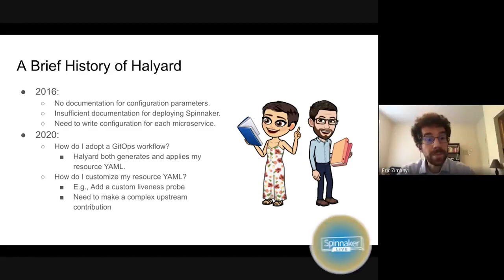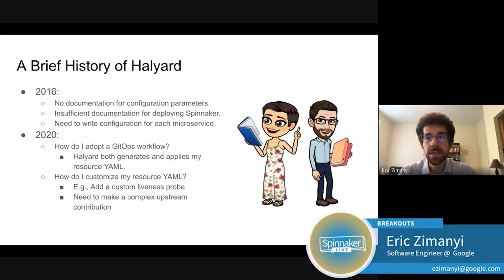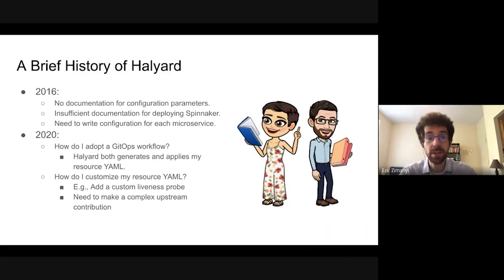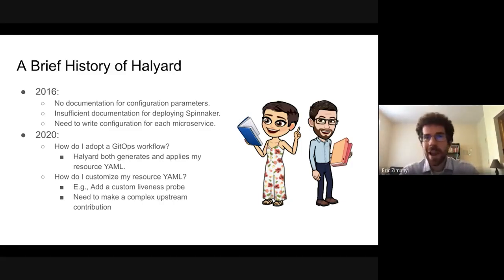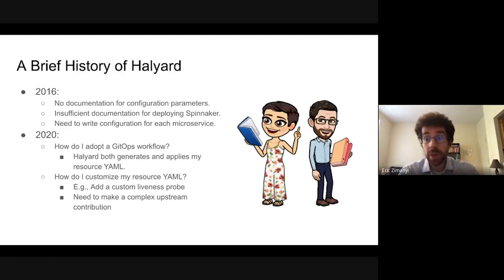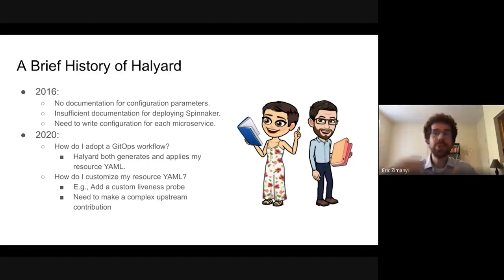Around 2016, the state of installation of Spinnaker was pretty difficult. Some of the problems that people trying to get started ran into were that there was no documentation of any of the config parameters. There was really no way other than asking in Slack or reading the code to understand what was configurable in Spinnaker. We had very little to no documentation on how to actually deploy Spinnaker, which involved downloading the right Debian packages, putting the config in the right place, and starting up all of those microservices, hoping that everything worked together.